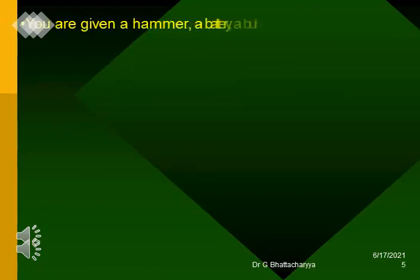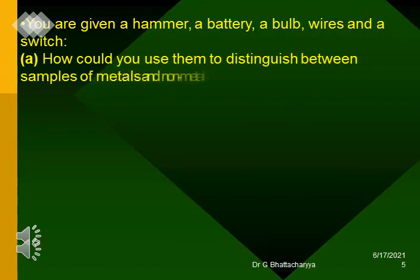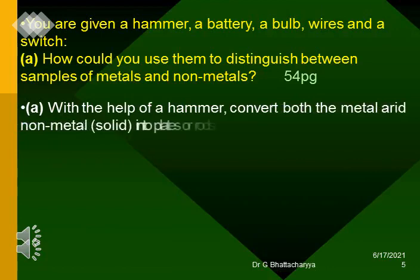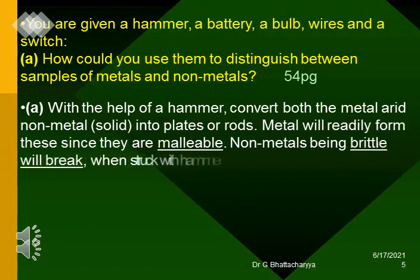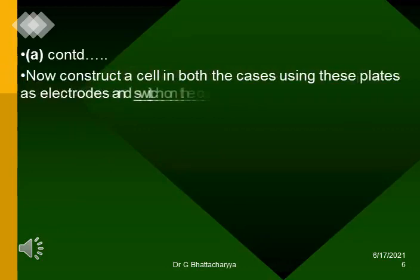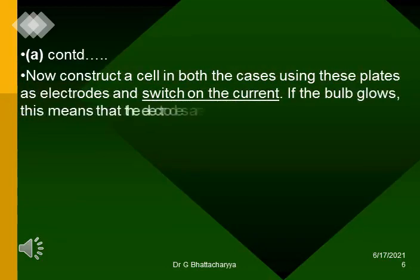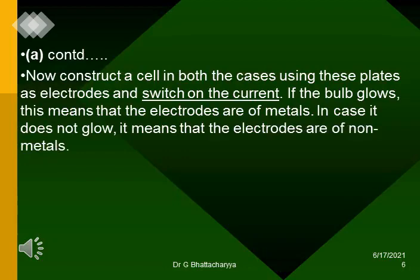You are given a hammer, a battery, a bulb, wires and a switch. A. How could you use them to distinguish between samples of metals and non-metals? With the help of a hammer, convert both the metal and non-metal solid into plates or rods. Metal will readily form these since they are malleable. Non-metals, being brittle, will break when struck with a hammer. Now construct a cell in both cases using these plates as electrodes and switch on the current. If the bulb glows, this means the electrodes are of metals. In case it does not glow, it means the electrodes are of non-metals.